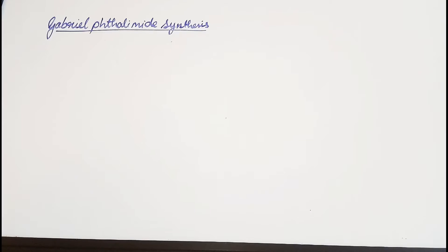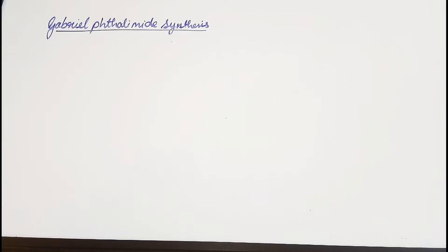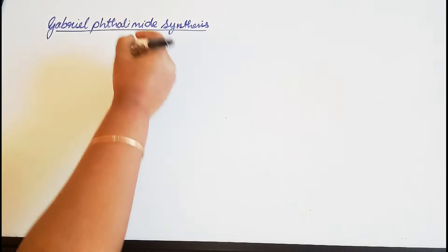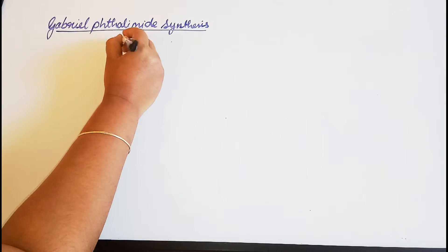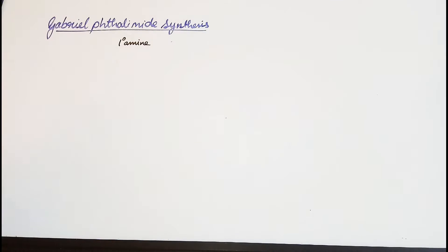In this video we are going to be talking about Gabriel Phthalimide synthesis. As the name suggests, it is used for the synthesis of a primary amine. So this particular reaction is used for the synthesis of a primary amine.